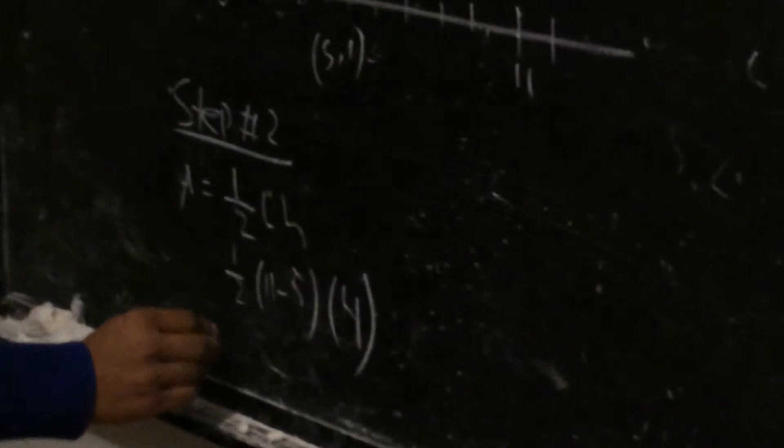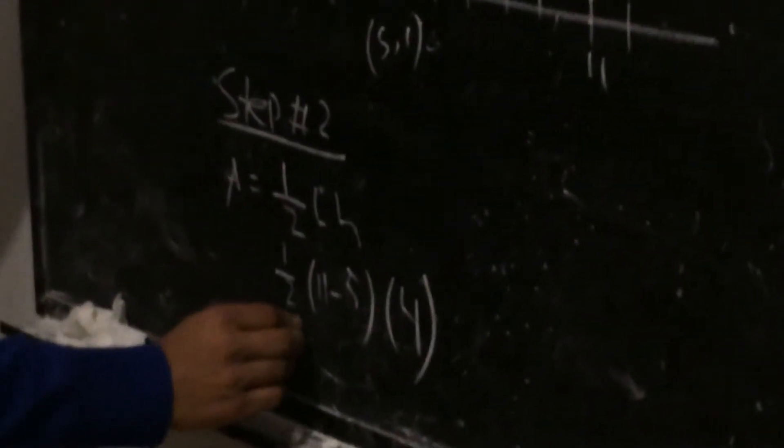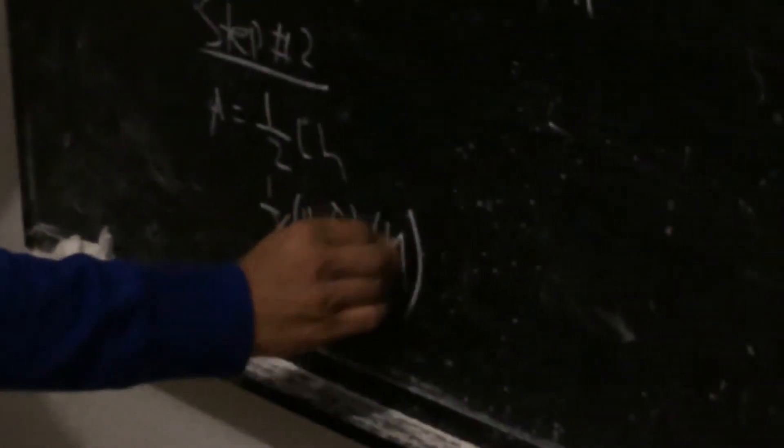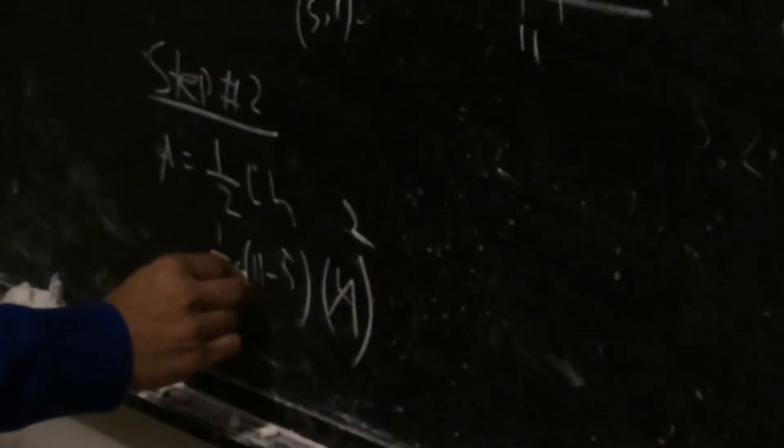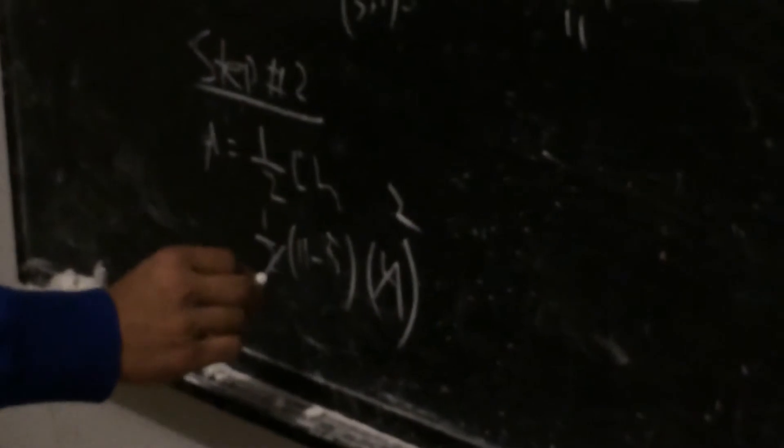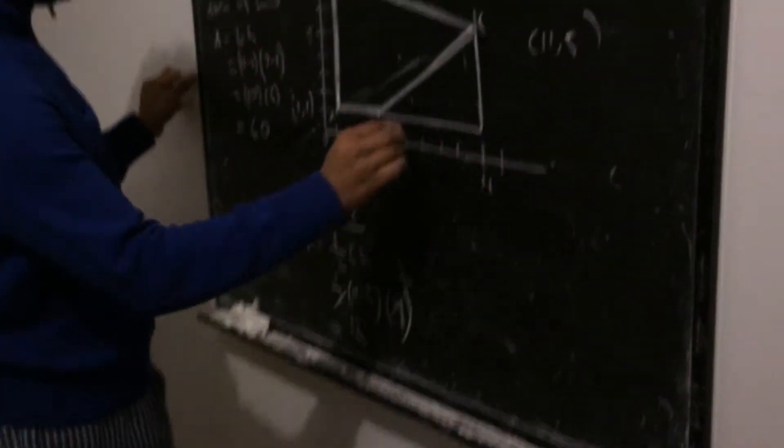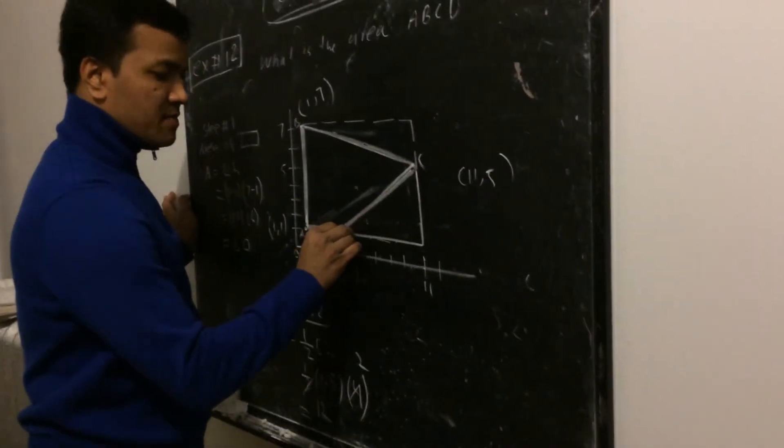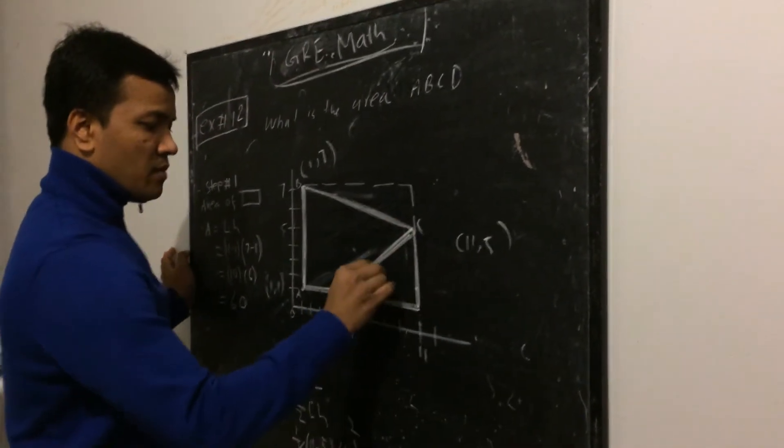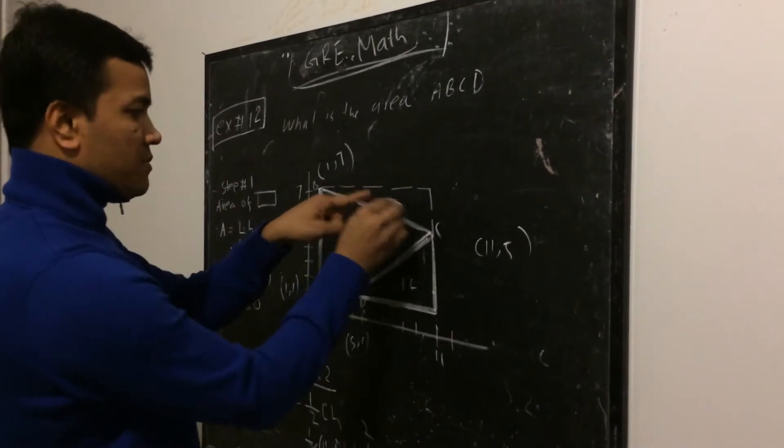So 10, this is 2. So 11 minus 5, right? 11 minus 5 is 6. So 12. This is 12. So this piece is, the area of this piece is 12. Now area of this piece, step 3.